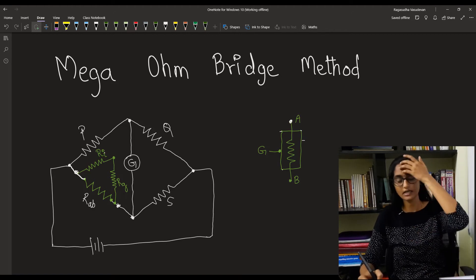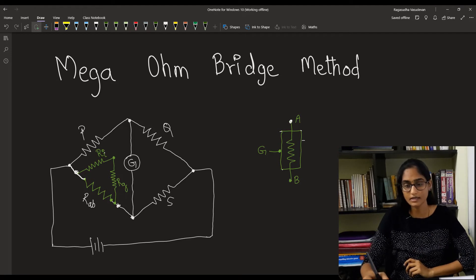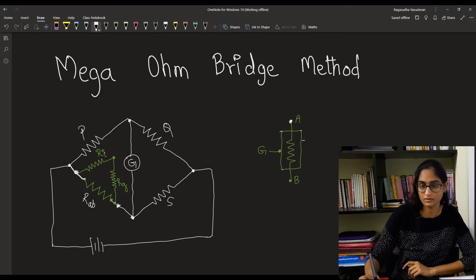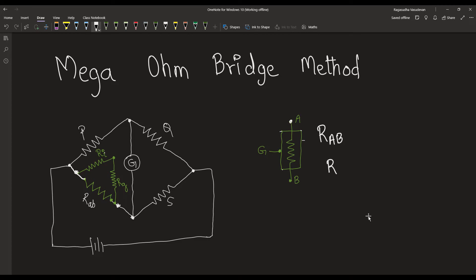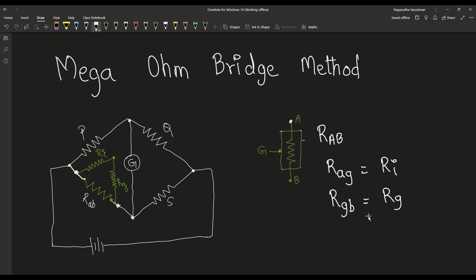Consider that this is the high resistance that you are going to measure, and the terminals A and B are the end terminals of this high resistance. The resistance R_AB is the resistance under measurement, which is connected in the R arm of the Wheatstone's bridge. The resistance R_AG equals the insulation resistance, which is mentioned as R_I. The resistance R_GB equals the guard resistance, or the resistance between the guard terminal and the end terminal of this resistance. When you have a setup like this, you will invariably reduce the value of the resistance R. This is just a modified form of Wheatstone's bridge. If you just plug in this high resistance into the R terminal, you will be facing errors because of the insulation resistance and the resistance between the guard terminal and this resistance.